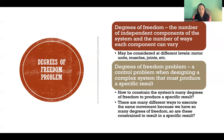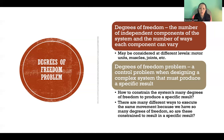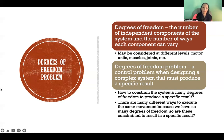That's the degrees of freedom problem: if we have so many variables and independent components that we can change and use differently to achieve the same goal, how do we decide the correct strategy? How do we constrain the system to produce the specific result we're looking for? That's a classic problem in motor control that different theories seek to explain — describing how we answer that question. Thank you so much for watching and I'll see you in the next video.